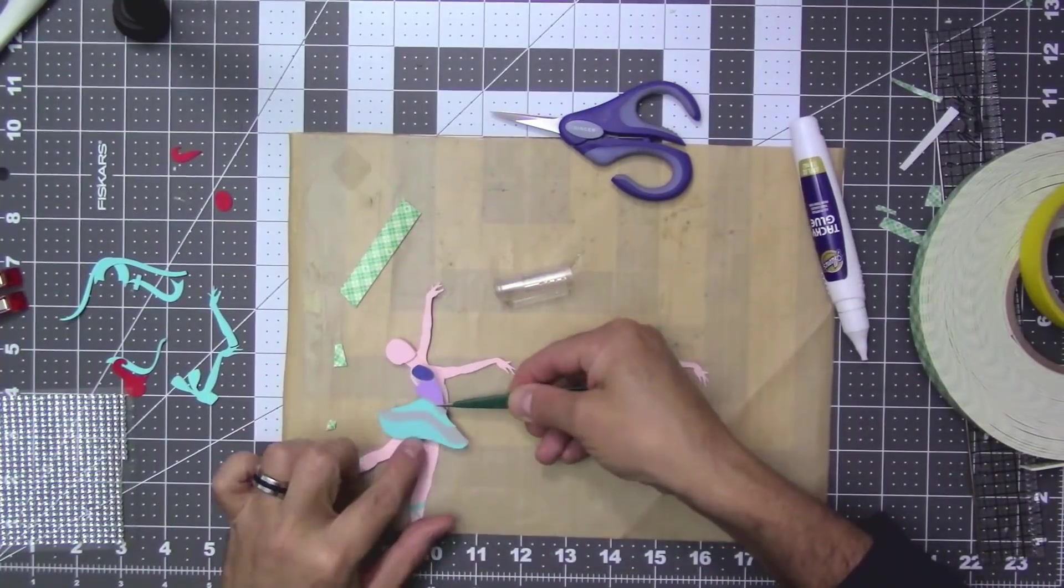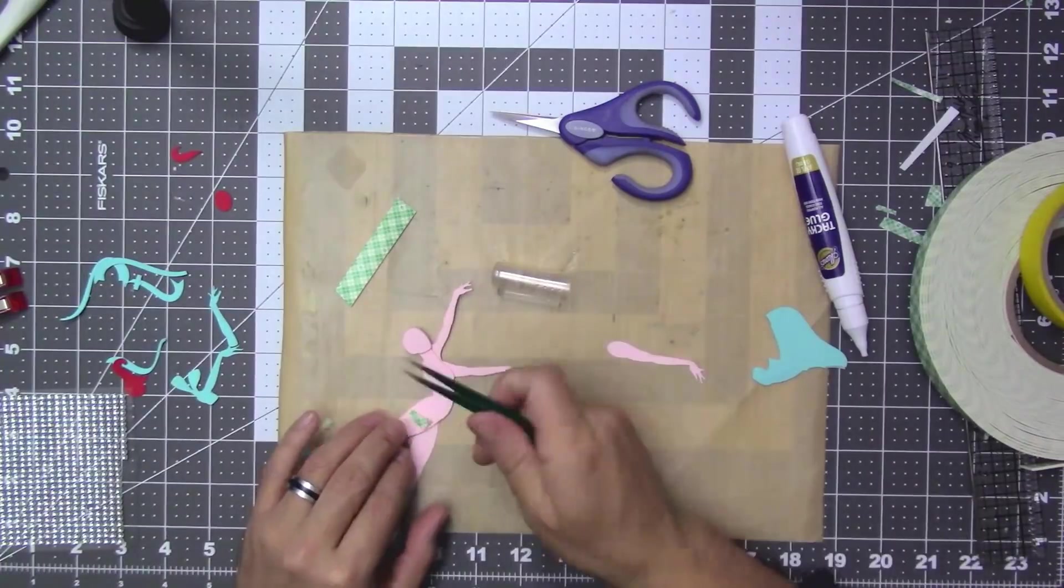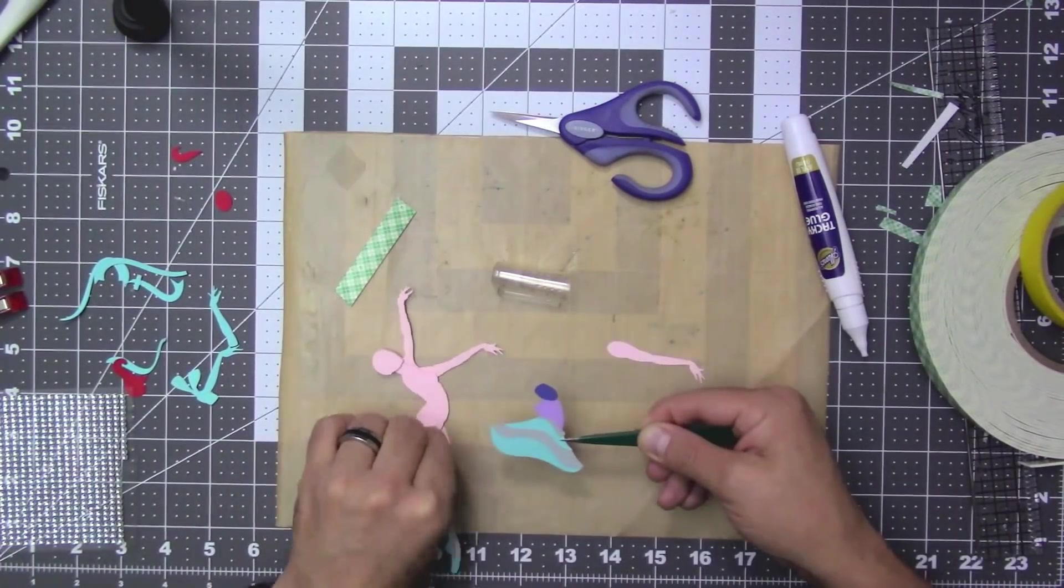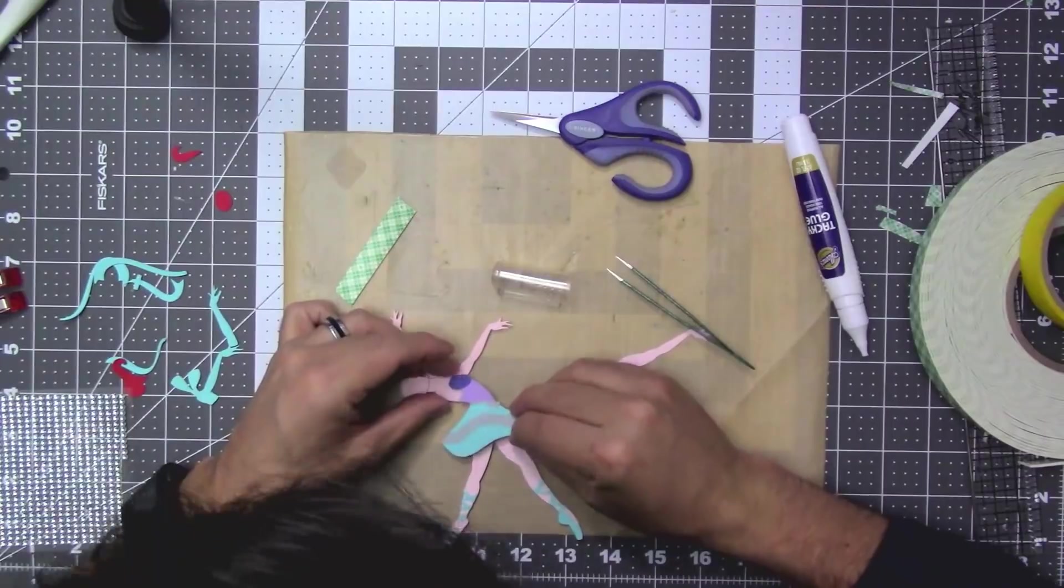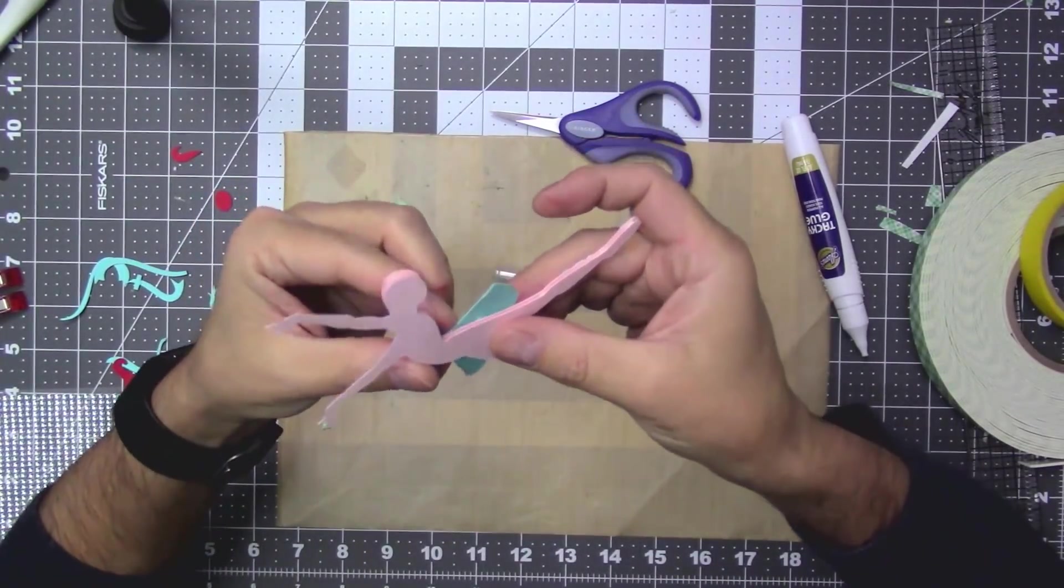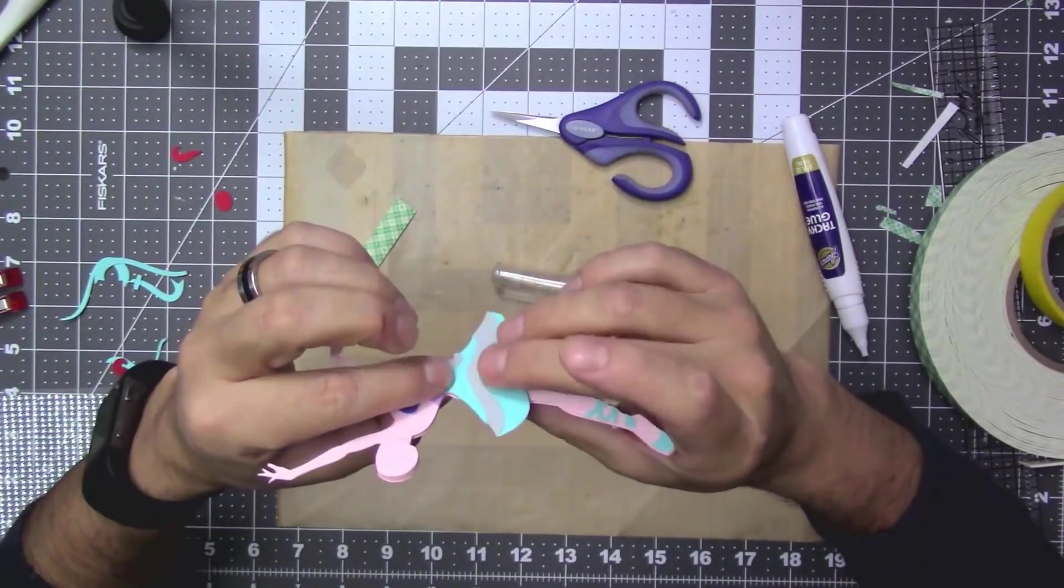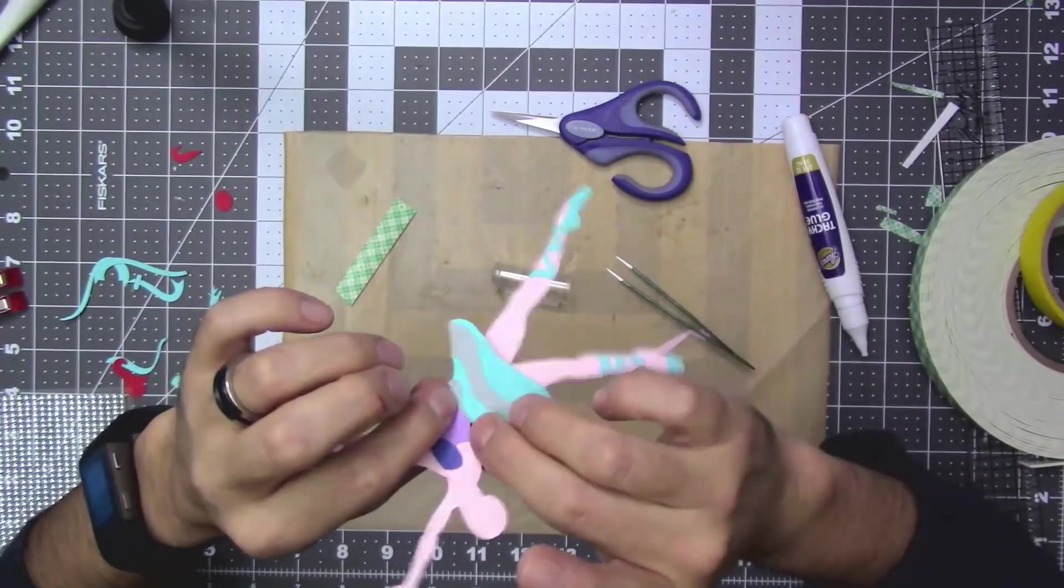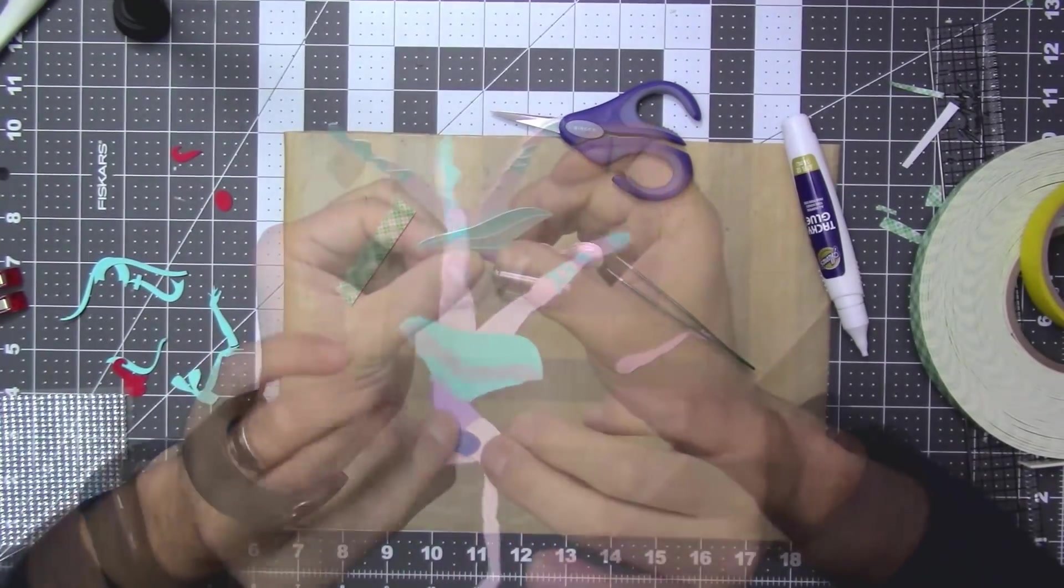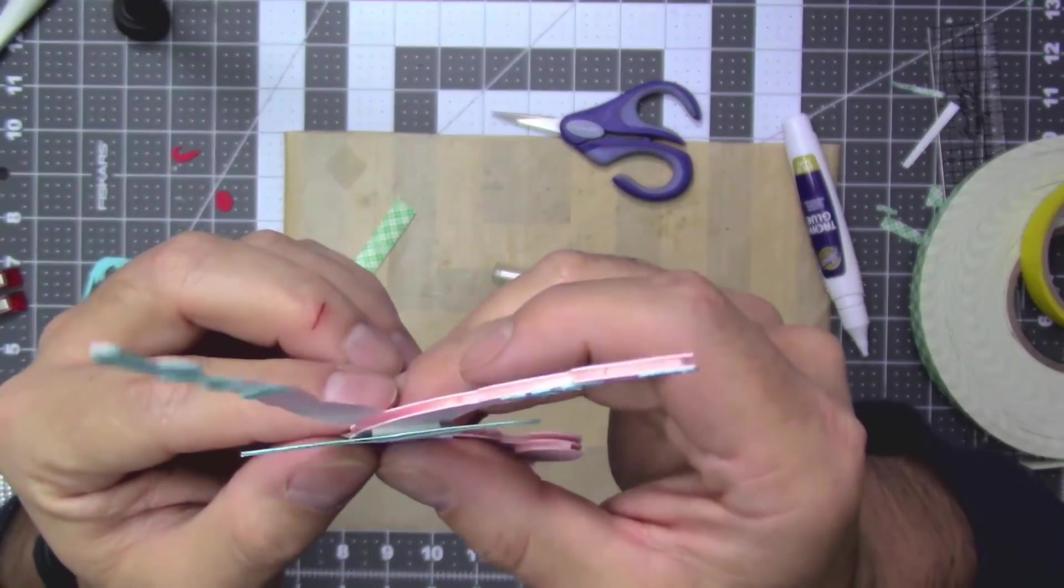Next, you will add the dress to the ballerina body. You have to use a piece of foam tape to adhere the lower piece of the dress. I wanted the skirt of the dress to pop up a little bit so I added a piece of foam tape to the front leg. Here you can see how it's popped up.